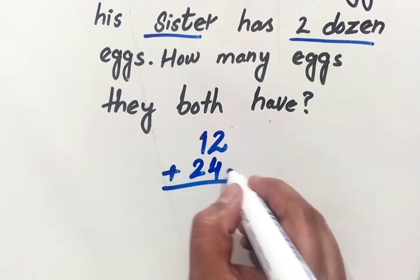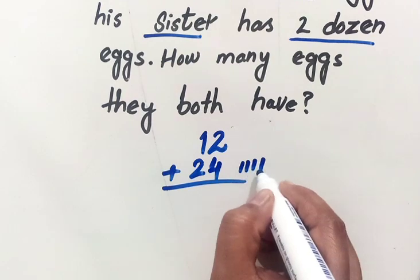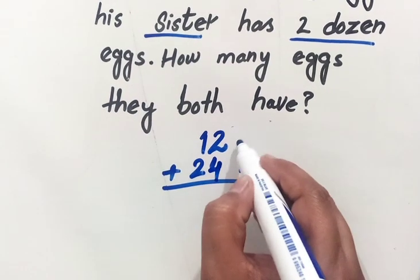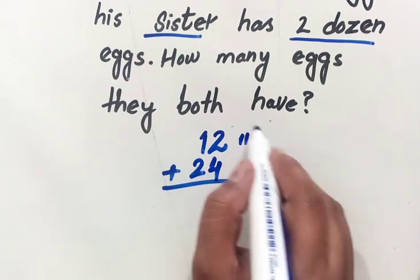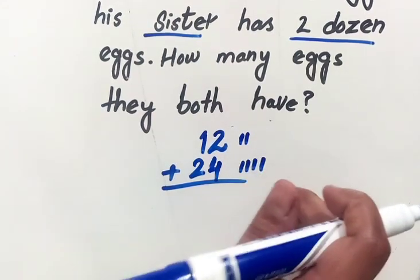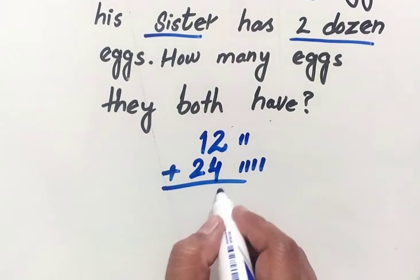I'll write four lines here, one two three four, four lines for this four. And I'll write two lines for this two, one two. Now I'll write these all lines together, one two three four five and six.